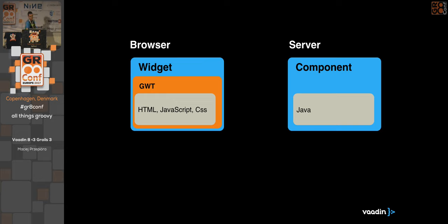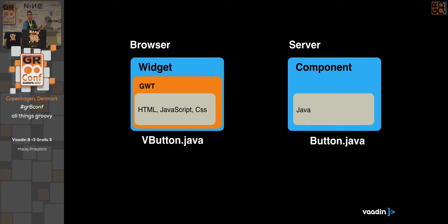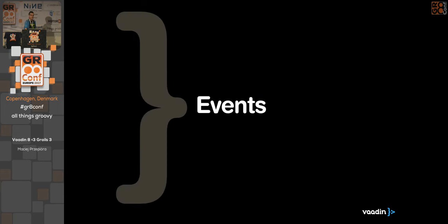Widgets are mostly created in GWT, and there is a naming convention: if you have a Button component on the server side, you'll have a VButton widget on the client side. That convention is used most of the time, though there are some exceptions.